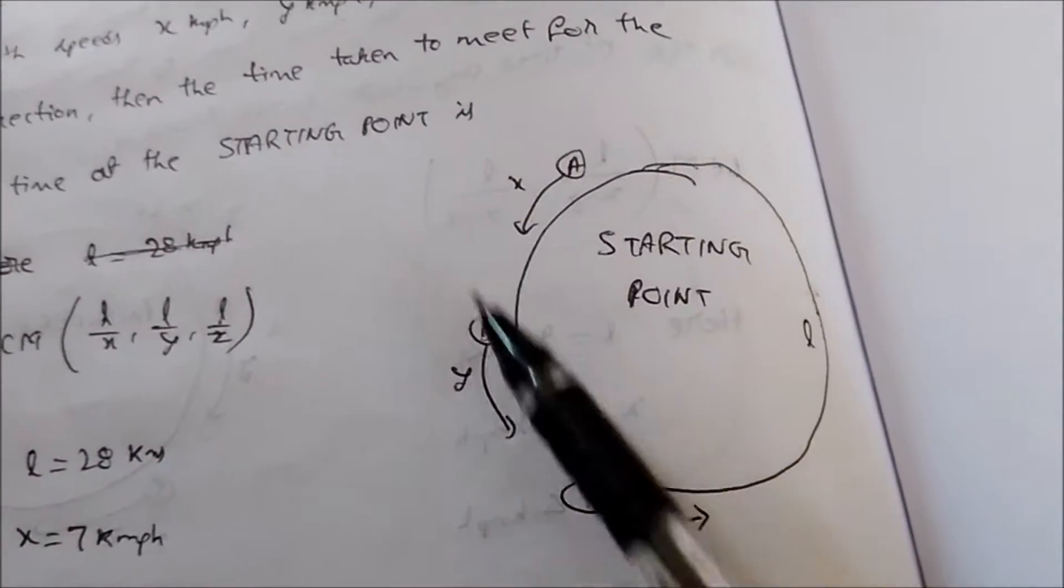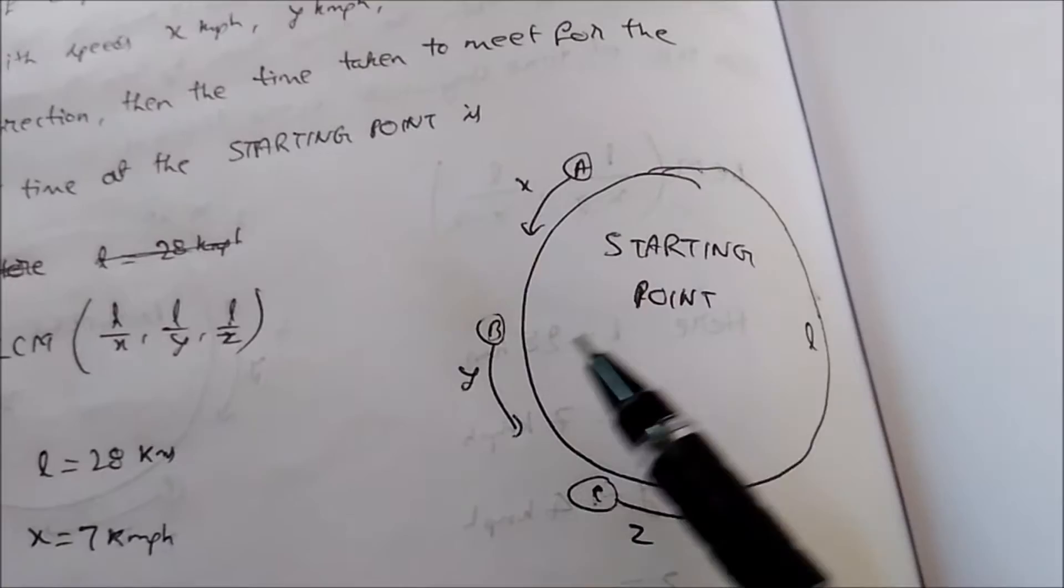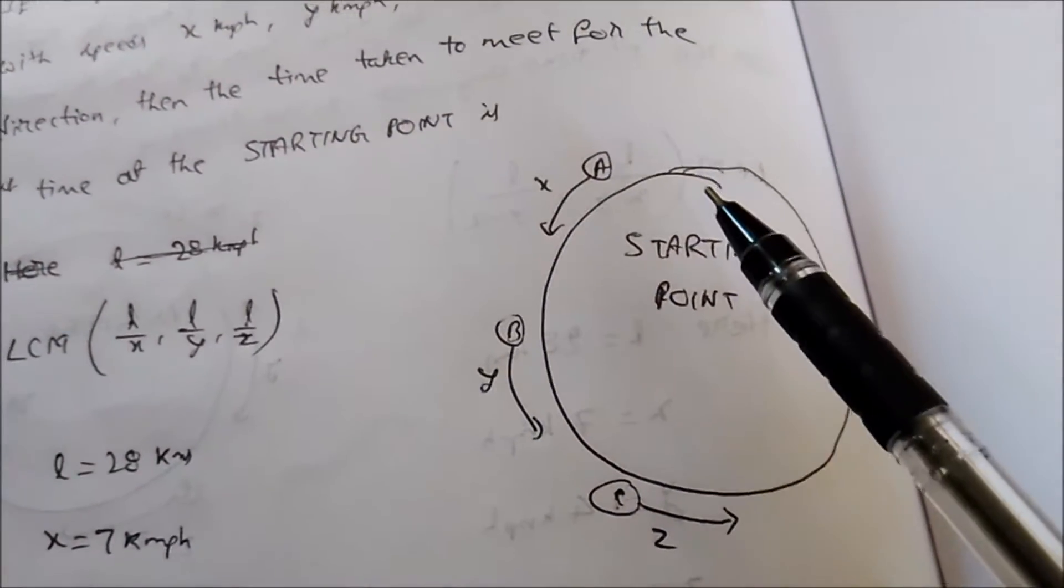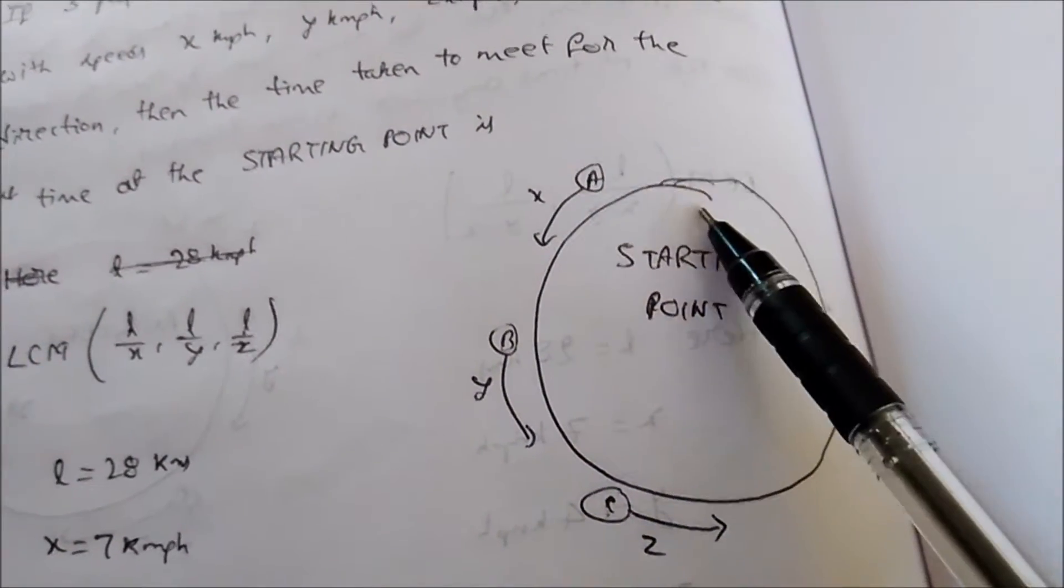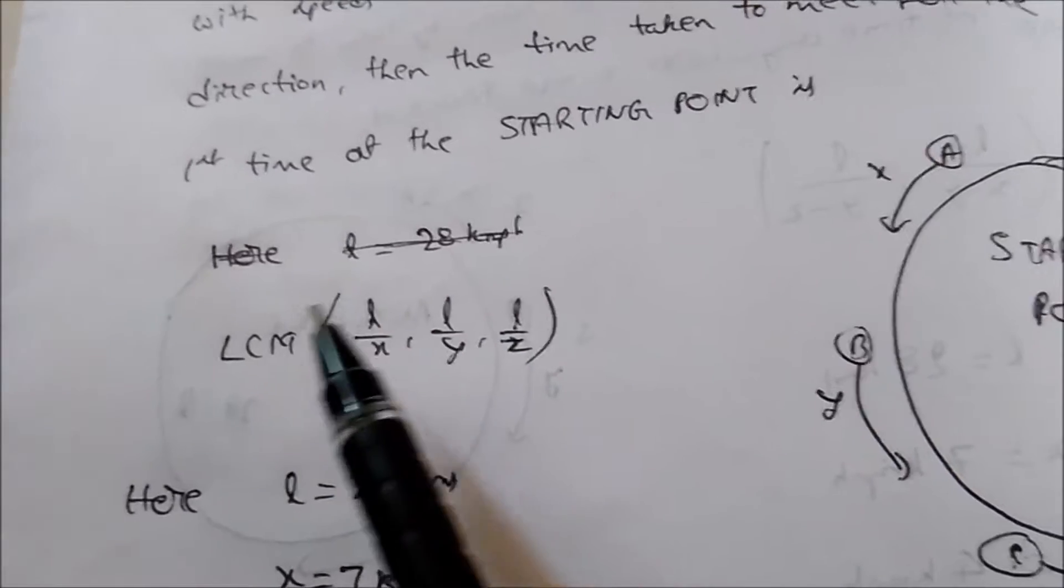Now the time taken for these three people to meet at the starting point for the first time on this circular track is LCM of L/X, L/Y, L/Z. It is our length of circular track, and X, Y, Z are speeds of these three people.